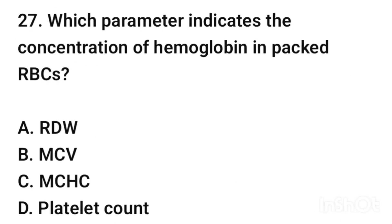Question number 27. Which parameter indicates the concentration of hemoglobin in packed RBCs? The correct answer is option C: MCHC (Mean Corpuscular Hemoglobin Concentration).